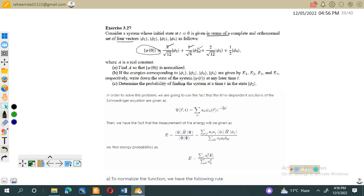The problem asks: First, find a so that ψ(0) is normalized. Second, if the energies corresponding to φ₁, φ₂, φ₃, φ₄ are given by E₁, E₂, E₃, and E₄, write down the state of the system at a later time, meaning we have to find ψ(t). Third, determine the probability of finding the system at time t in the state φ₂.